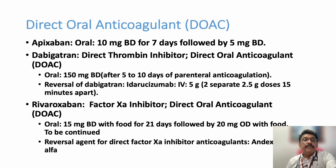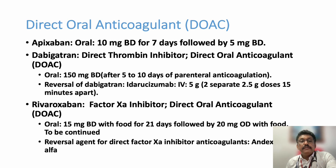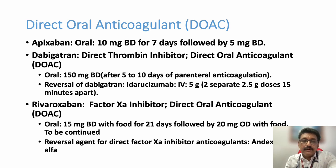Direct oral anticoagulant dosing: apixaban 10 mg BD for 7 days followed by 5 mg BD. Dabigatran 150 mg BD; if the patient develops bleeding, reversal can be done with idarucizumab 5 g IV. Rivaroxaban is a direct factor Xa inhibitor; dose is 15 mg BD with food for 21 days, followed by 20 mg once daily with food. Its reversal agent is andexanet alfa. These drugs do not require regular PT-INR monitoring, unlike warfarin. Another warfarin-like drug, acenocoumarol, also requires PT-INR monitoring.